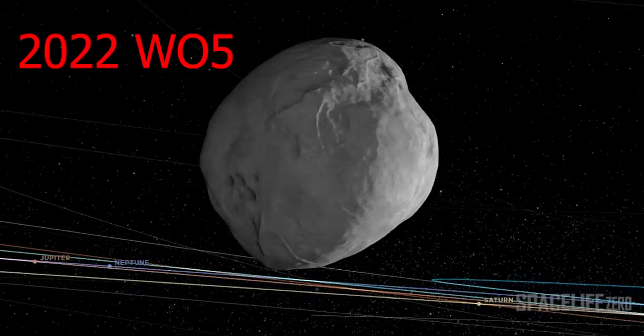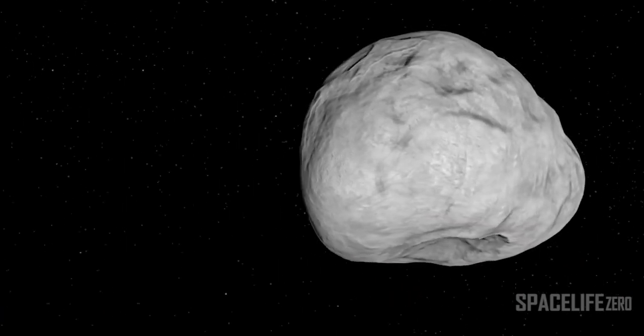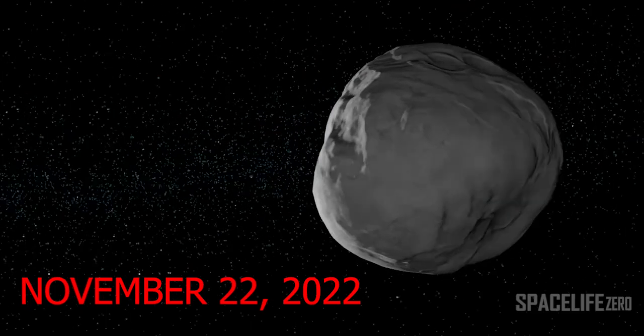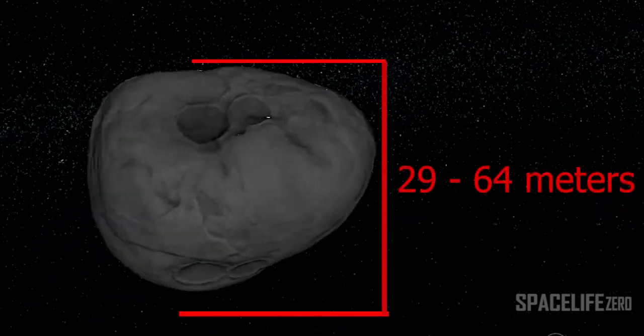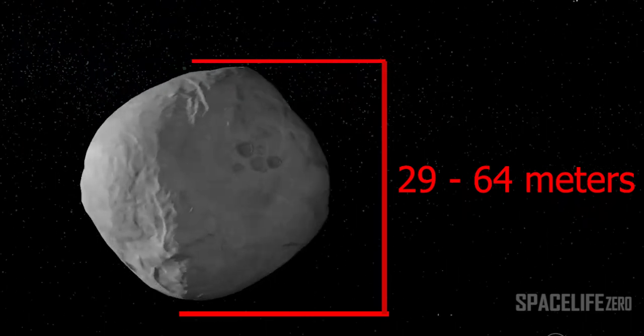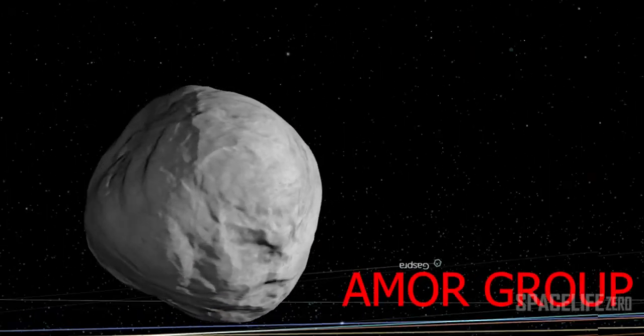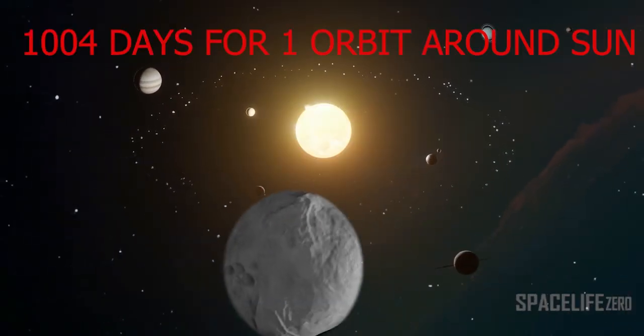Asteroid 2022 W05. The asteroid 2022 W05 was discovered on November 22, 2022. Its size is estimated in the range from 29 meters to 64 meters. This near-Earth object belongs to the Amor Group. It makes one orbit around the Sun in 1,004 days.